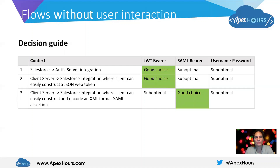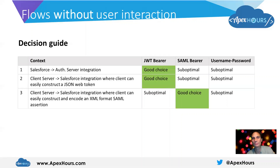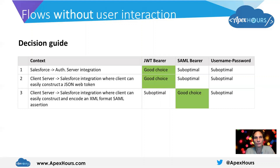If we're implementing the integration the other way around — so Salesforce is acting as the auth server and a client is authenticating to Salesforce or retrieving an access token from Salesforce — then it's mostly down to the technology within that client as to whether the JWT bearer or the SAML assertion bearer flows are most appropriate. Both are very secure and share a lot of common benefits, so depending on the client technology, either of those are appropriate. The username-password flow is really not a good option for any of these contexts and we should really try to avoid using it.